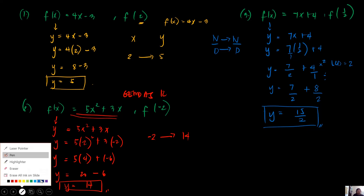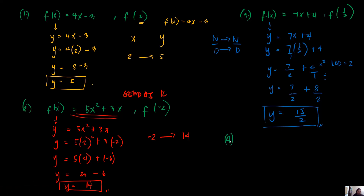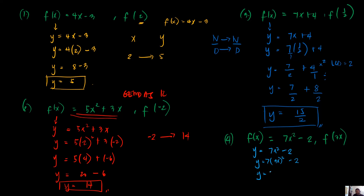Let's have another example. f of x is equal to 7x squared minus 2, given that the value of x is 3x — this time it has a variable. Transform into y equals 7x squared minus 2, then substitute x with 3x: y equals 7 times (3x) squared minus 2, which gives 7 times 9x squared minus 2, so y is equal to 63x squared minus 2. Since there are no common factors between 63 and 2, this is the simplest answer.